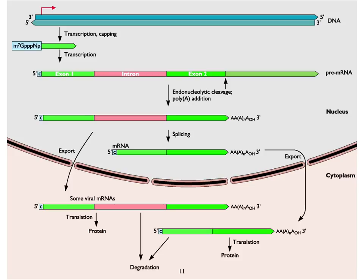As genes are transcribed, they are capped. Exons bound introns; in some cases these are endonucleolytically cleaved and spliced so two exons are combined. The poly-A moiety is added during or post-synthesis. The RNA is recognized as mRNA and transported out of the nucleus through discrete pores. Some virus RNAs contain introns and tend to predominantly translate only the first exon; others that have joined exons produce a translation product from that. Eventually those messenger RNAs are degraded.